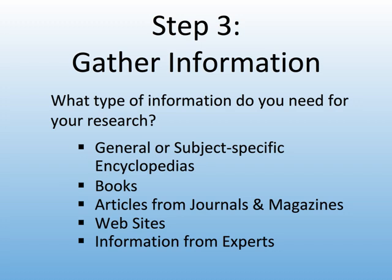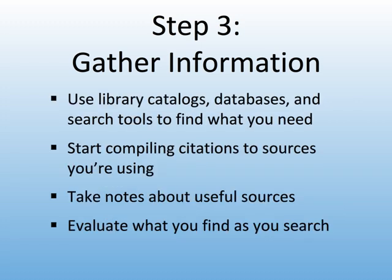Step three: gather information. Think first about what kind of information you need for your research. General and subject-specific encyclopedias provide a broad overview; books provide in-depth and historical background. To locate more focused information, look for articles from scholarly journals, newspapers, trade magazines, and popular periodicals, as well as websites and experts in the field. Use your search statements in library databases to help you find those resources.